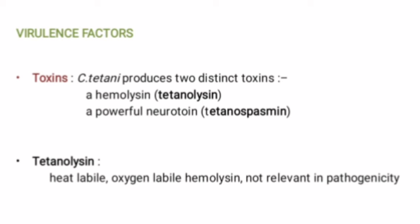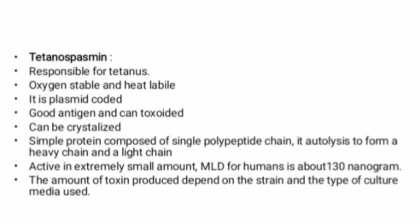Next we discuss the virulence factors of Clostridium tetani. This organism has the ability to produce powerful toxins. Clostridium tetani produces at least two distinct toxins: a hemolysin known as tetanolysin and a powerful neurotoxin known as tetanospasmin. Tetanolysin is a heat-labile and oxygen-labile hemolysin, antigenically related to the oxygen-labile hemolysins produced by Clostridium perfringens, Streptococcus pyogenes, etc. Tetanolysin is responsible for the hemolysis on blood agar but is not relevant in the pathogenesis of tetanus.